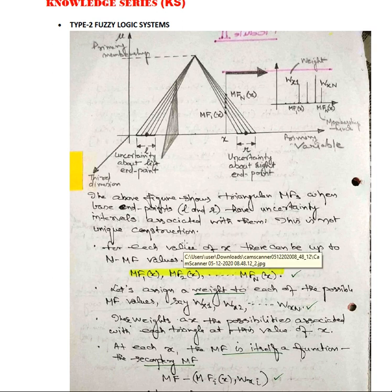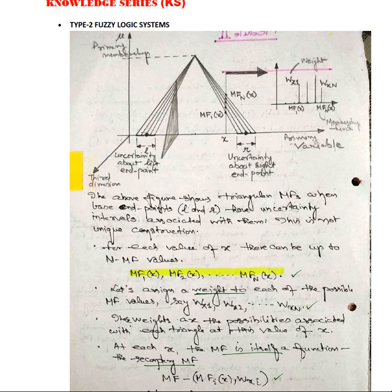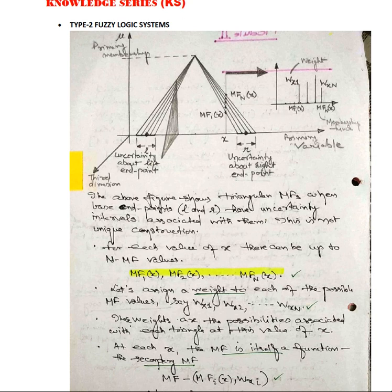From the above you can try to see that L and R is nothing but the area of the footprint of uncertainty on the left side and right side. This uncertainty may not be unique. For each value of X there are a number of membership values. So here you are getting MF1, MF2, up to MFN. For each membership function you are representing its own weight — WX1, WX2, up to WXN. That is the third dimensional perspective.